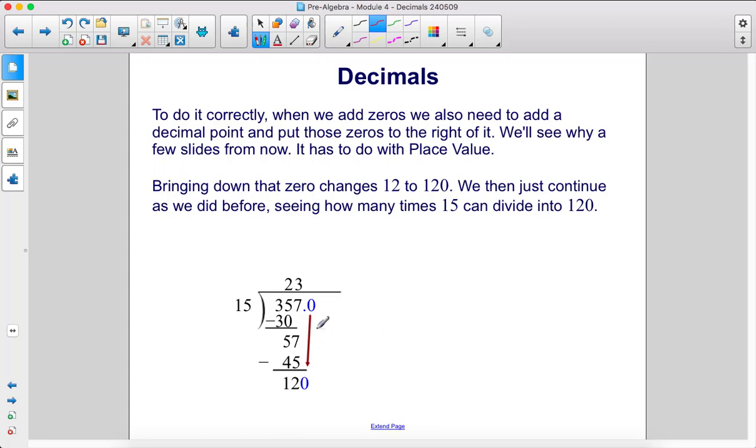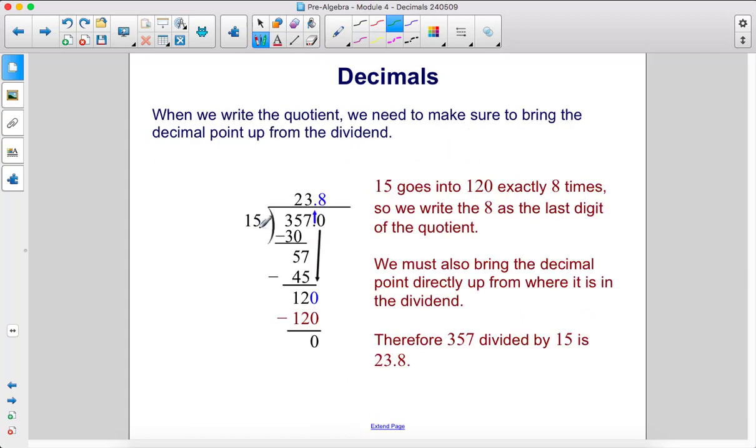Writing down that zero changes 12 to 120. We then just continue as we did before, seeing how many times 15 can divide into 120. 15 goes into 120 exactly eight times, so we write the 8 above that zero.